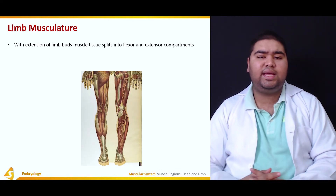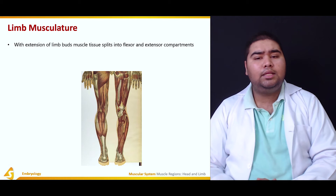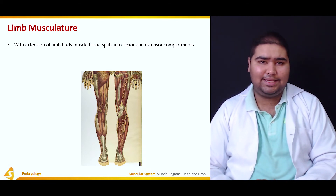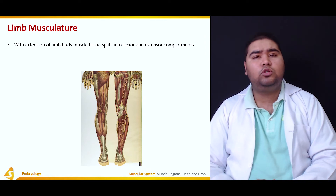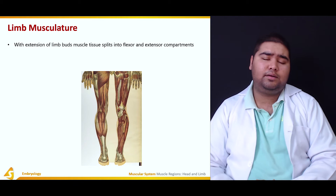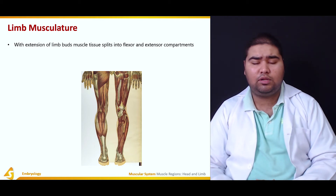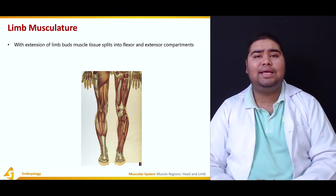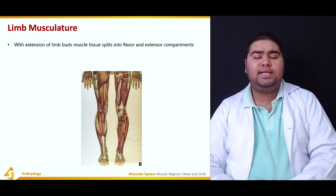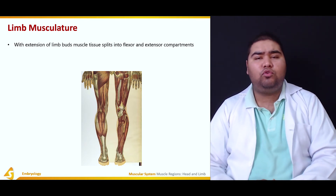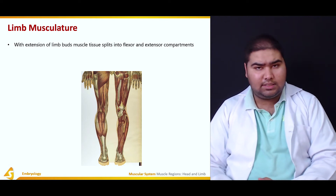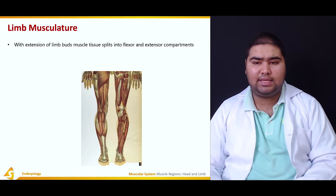With extension of the limb buds, the muscle tissue splits into the flexor and extensor compartments. Flexion is the condition in which the angle between the proximal and the distal portion — the fore and hind limb — is decreased. Extension is a process in which that angle is increased, or it is the normal state.